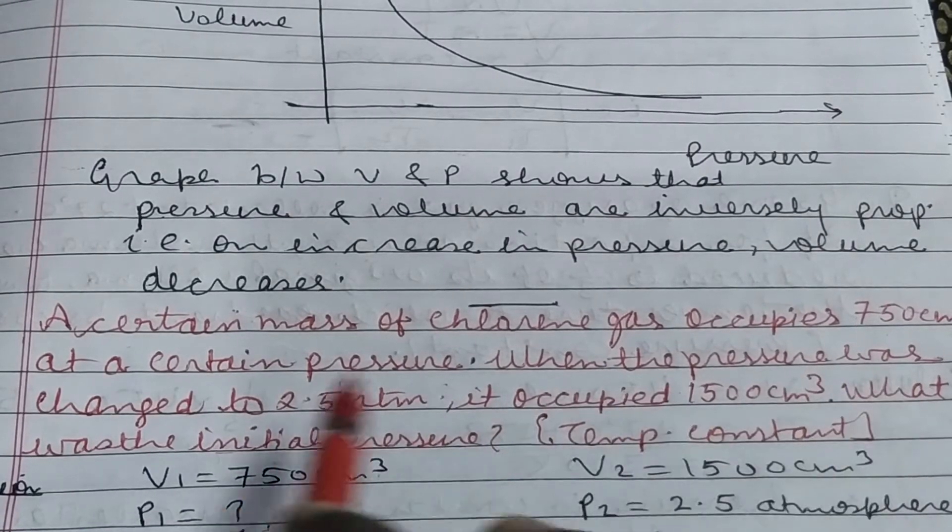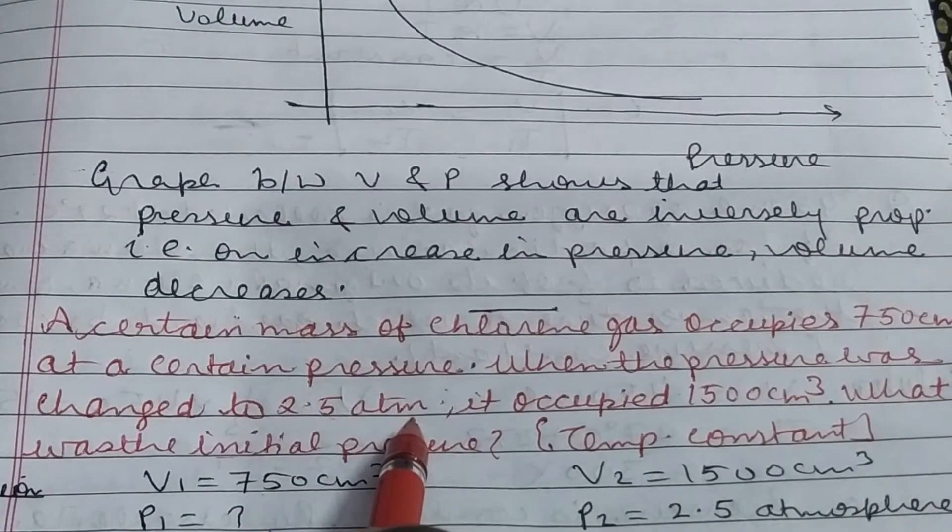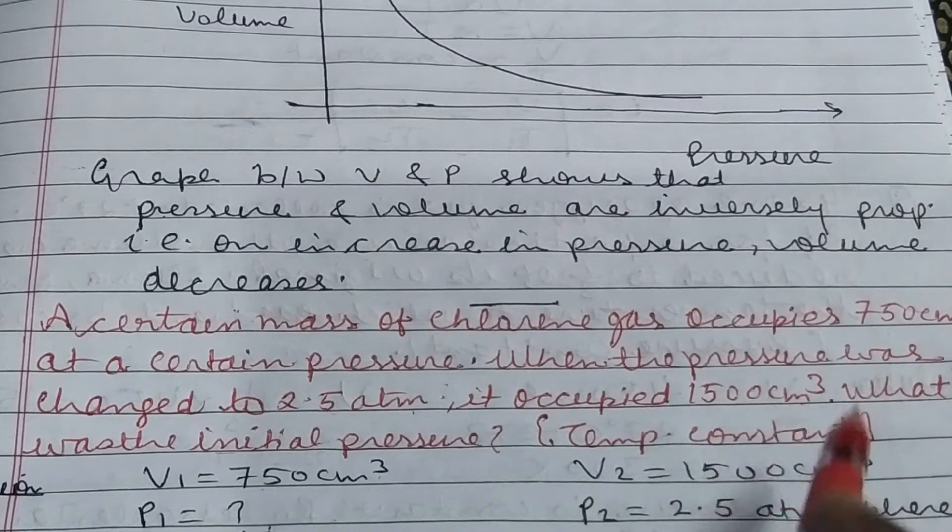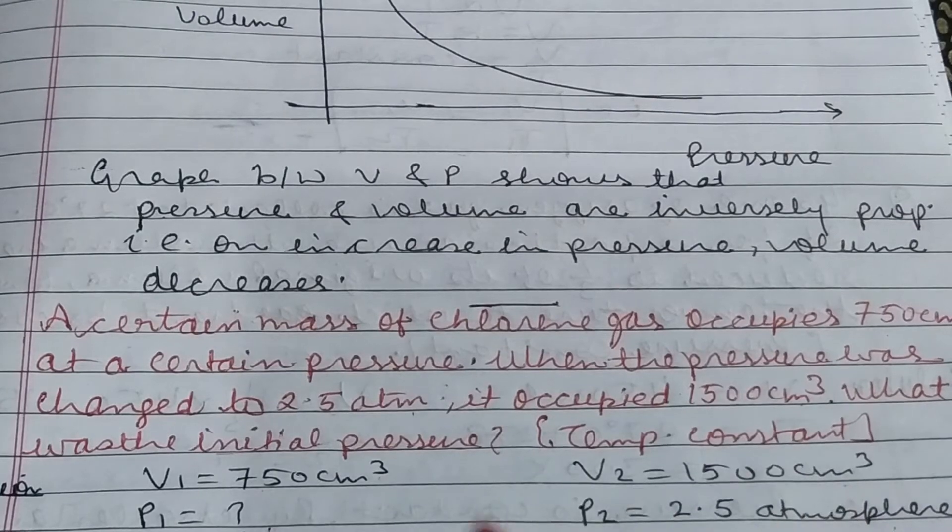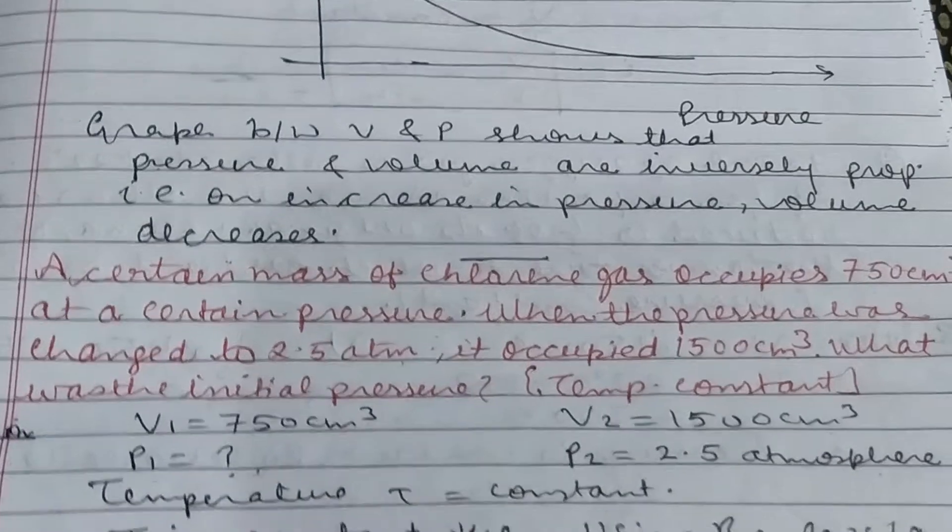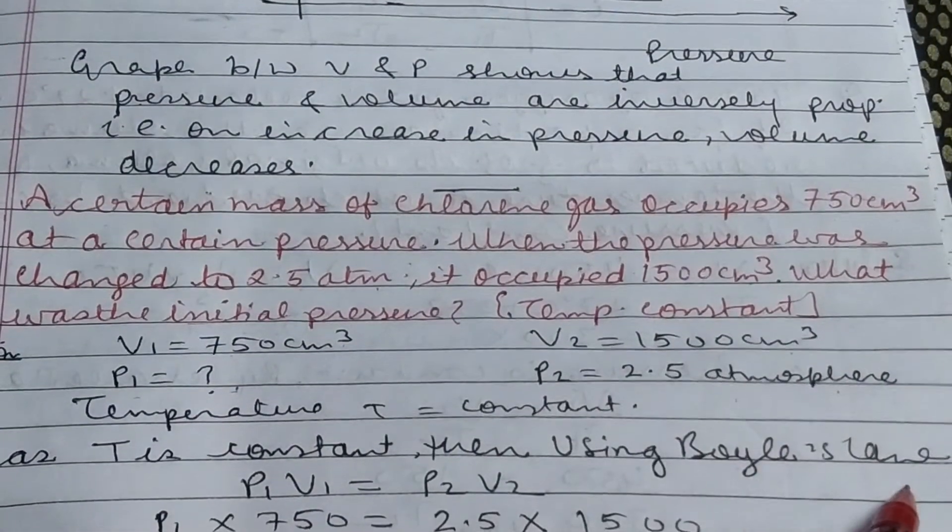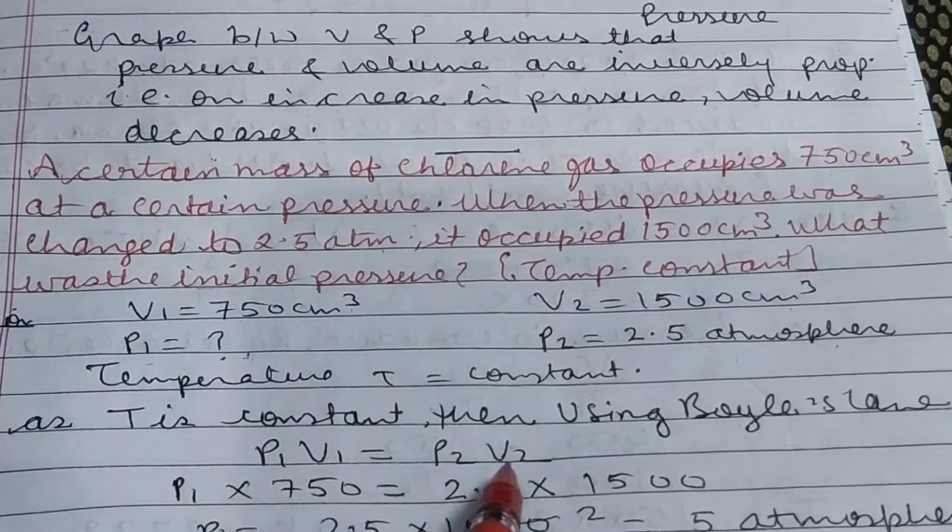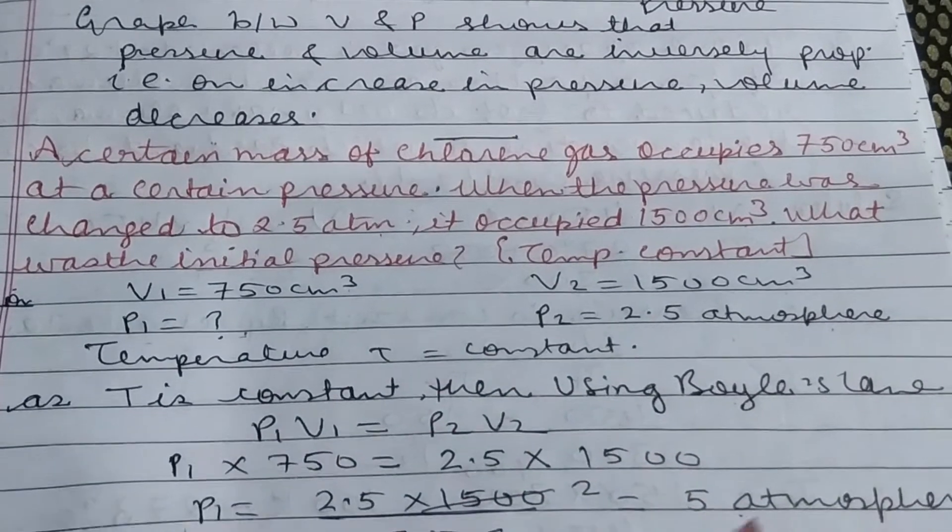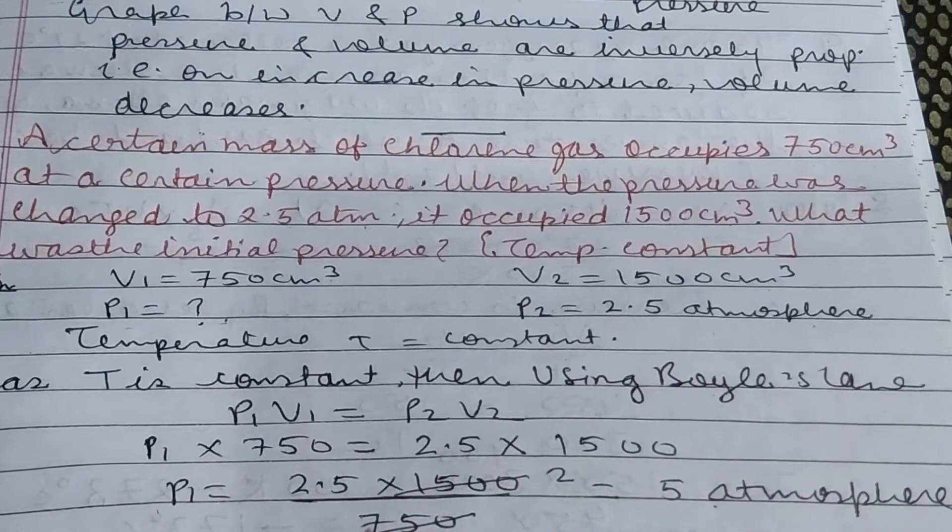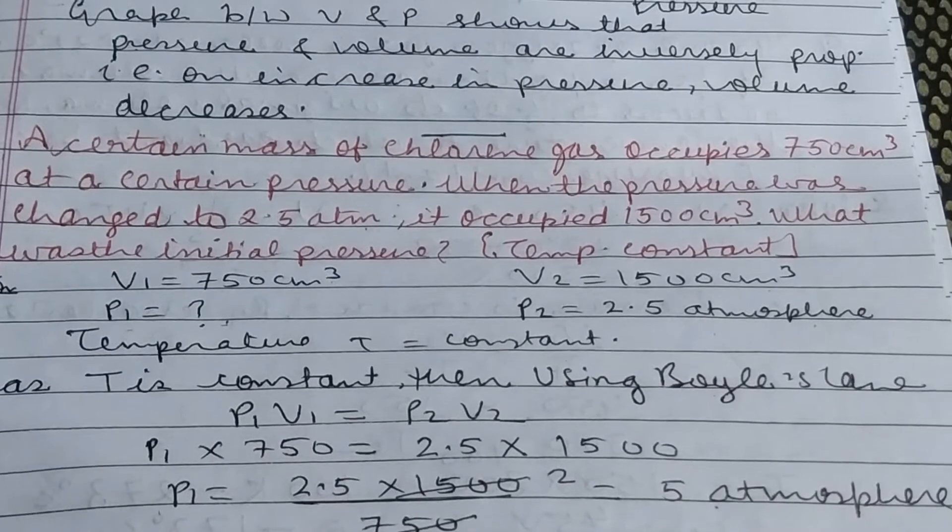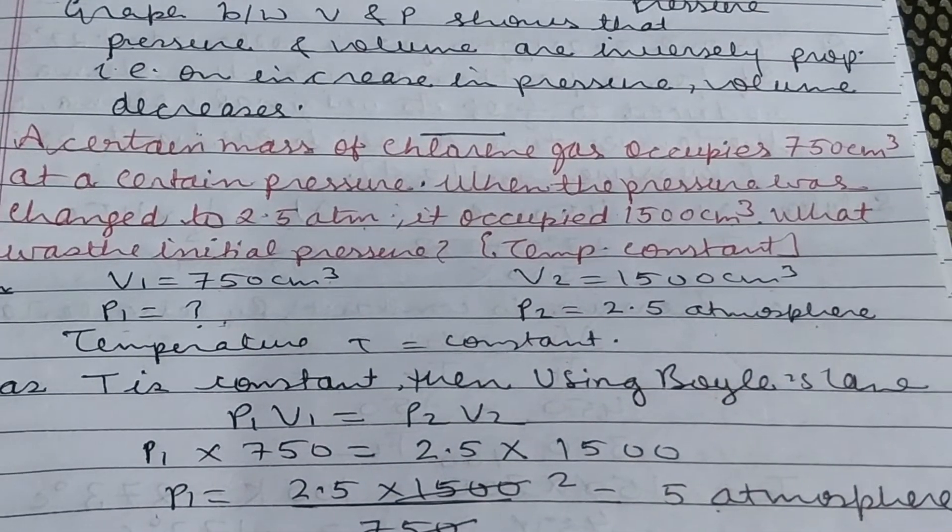Pressure changed to 2.5 atm (this is P2) and occupied volume 1500 cm³ (this is V2). Since temperature is constant, use Boyle's law. According to Boyle's law, P1V1 equals P2V2. Put these values and you get the result: 5 atmospheric pressure. This type of question you can do easily from your textbook.